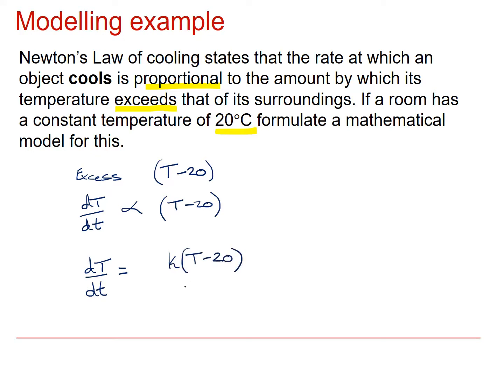However, I expect this to be negative because I would expect the rate of cooling to be a reduction in temperature. Now, T minus 20, if the thing is warmer than the room, T minus 20 will be positive. So I'm going to put a minus sign in front to indicate that this is going to be a rate of cooling.